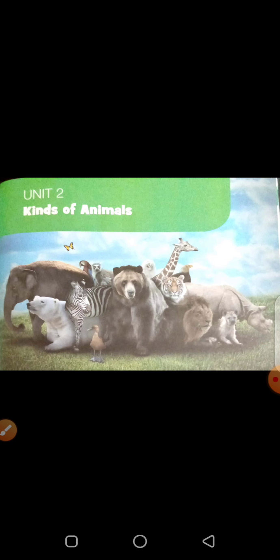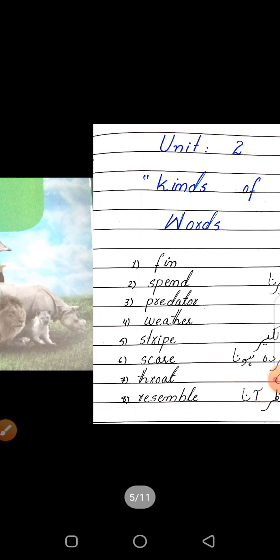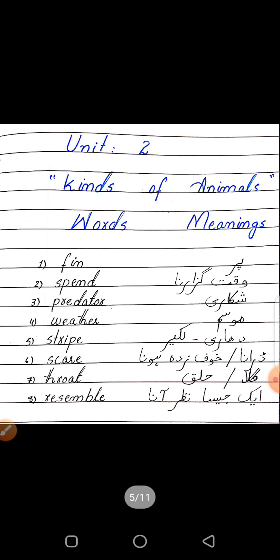There are different kinds of animals. As you know, before starting any unit, we first do its word meanings. So here are the word meanings of unit number two, 'Kinds of Animals.' We will go through the word meanings.